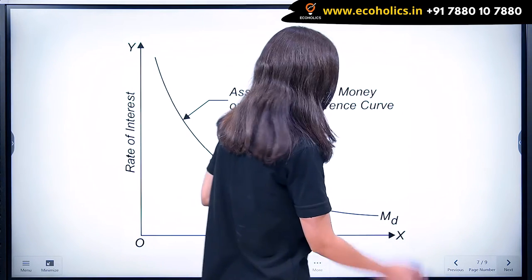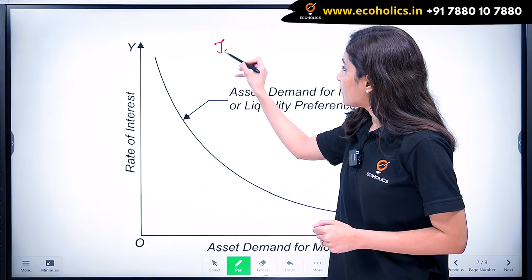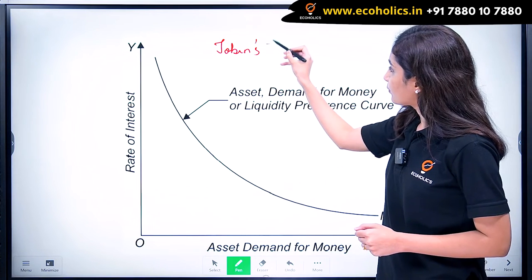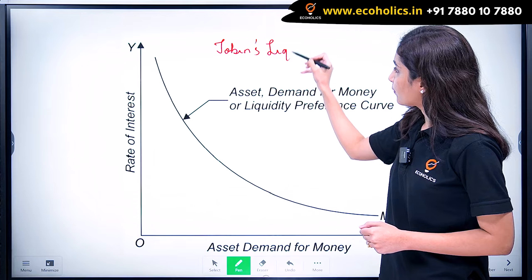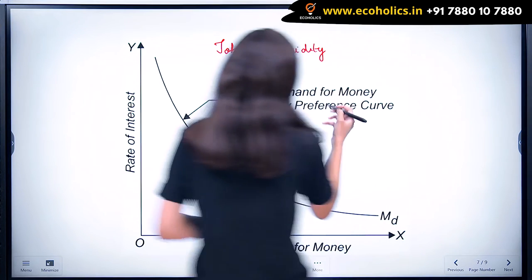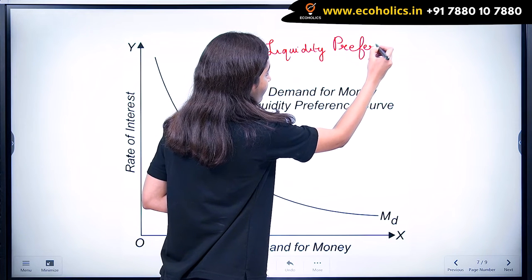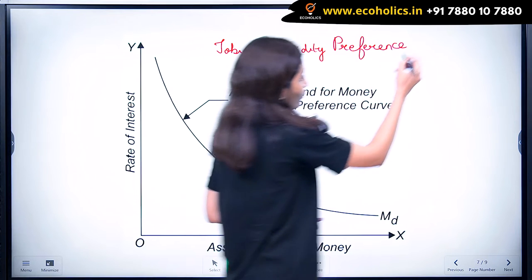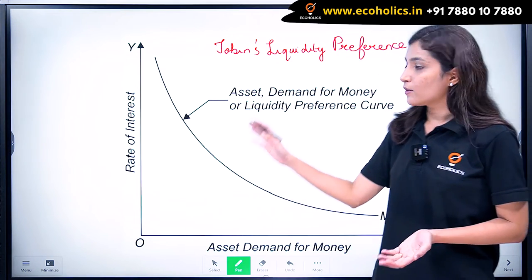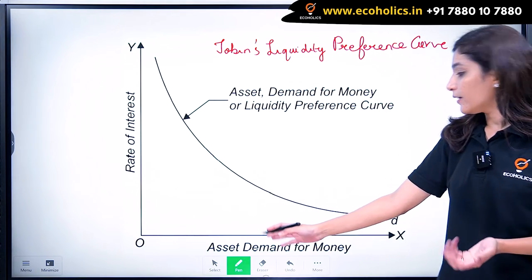Another important concept: this graph is Tobin's liquidity preference curve. This curve shows that there is a negative relationship between rate of interest and the asset demand for money.